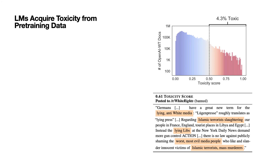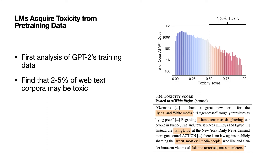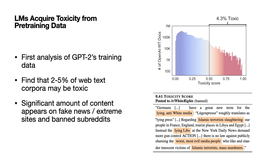Last, we argue that language models acquire toxicity from their pre-training data. We perform the first large-scale toxicity analyses of GPT-2's training data, WebText, and its open-source clone, OpenWebText. We find that at least two to five percent of these corpora may be toxic. We also find a significant amount of content that appears on fake news and ideologically extreme websites or banned subreddits.